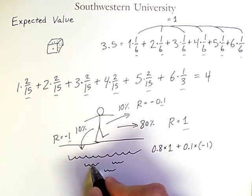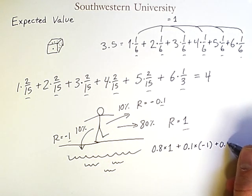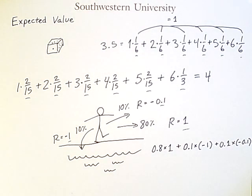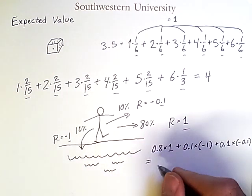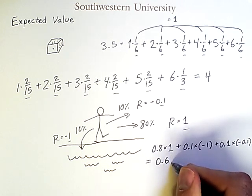So that's the result of me falling in the water here, plus 0.1×(-0.1). And so that is the outcome of me stumbling on the edge of the pool, but not actually falling in the water. So if you add these up, you should get a value of 0.69.